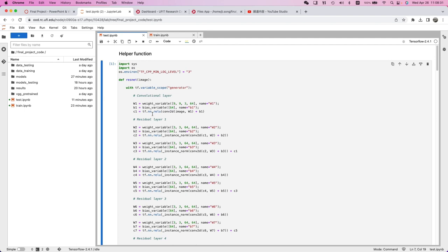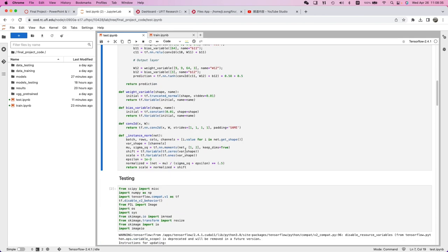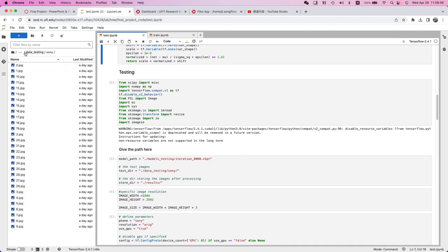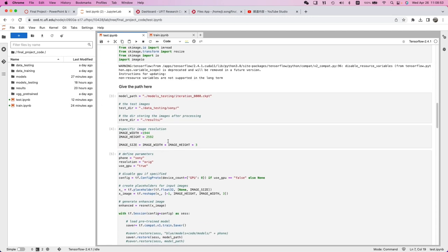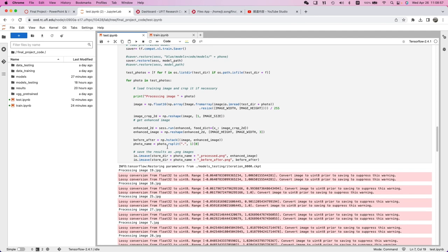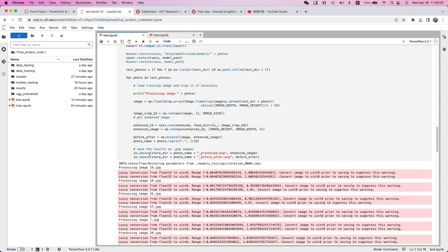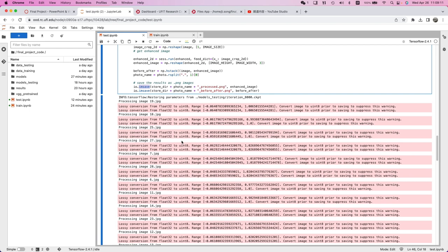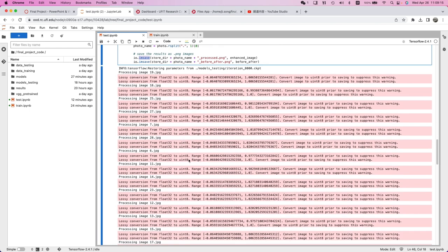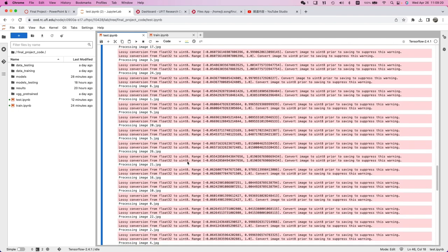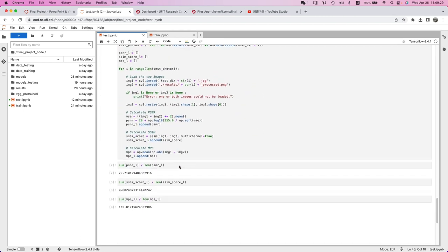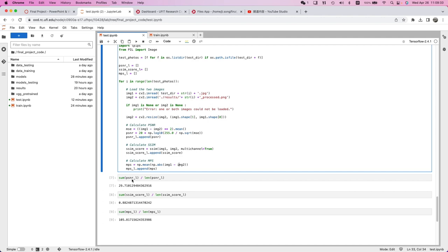So in the test notebook, we first define some helper functions to define the model we use. And then there is a test set that contains 28 full-size pictures that can be used to test our data. Because we're running it on the server, we cannot use an image show to display it directly in Jupyter Notebook. So we save them under the directory. This is the testing process. There is some warning about float32 to uint8, but it didn't influence the final effect. So after processing all the 28 photos, we are evaluating the metrics of them, like PSNR, SSIM.